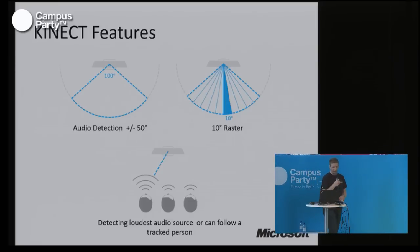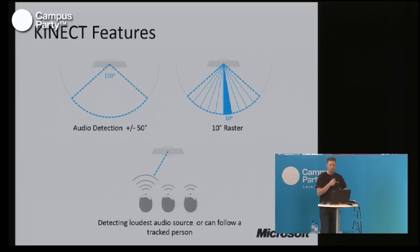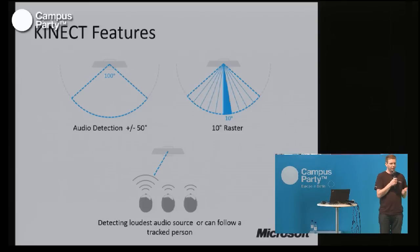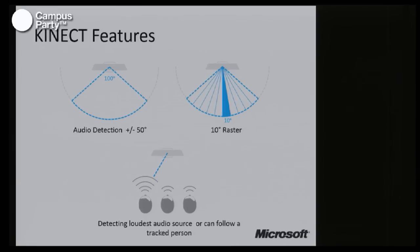The Kinect for Windows includes a microphone array and you can actually detect where the audio is coming from. If you think about building a robot that wants to track a certain person and react to voice commands, you can actually optimize the recognition of the audio by pointing the microphone array to a certain degree, or you can track the audio from a tracked person, so you always get the audio from the person within the range of the Kinect.